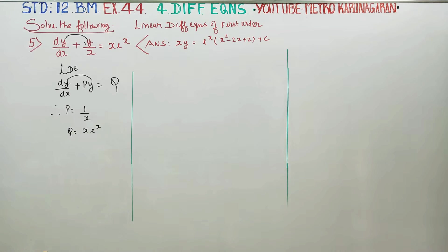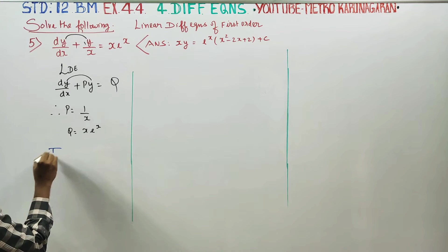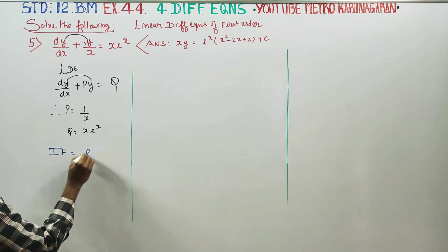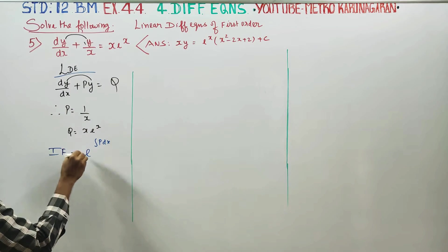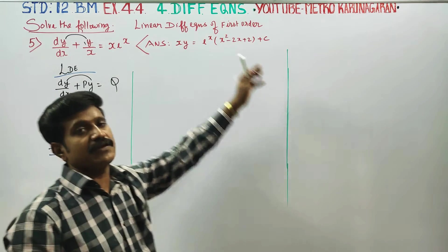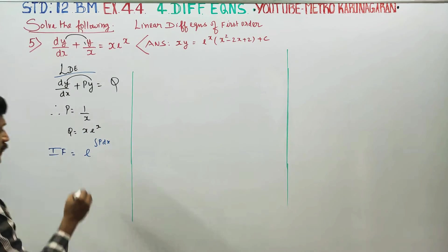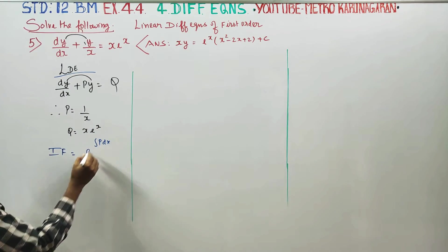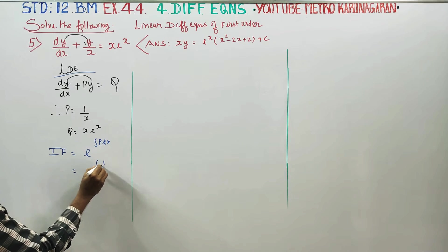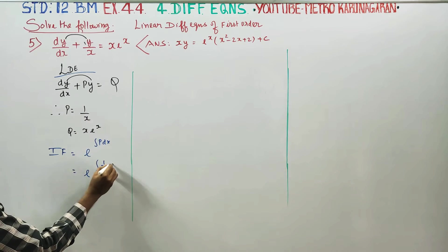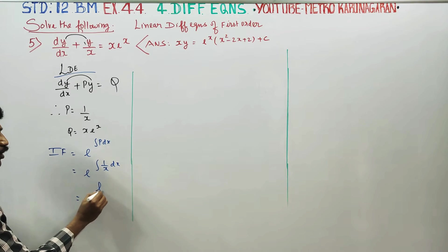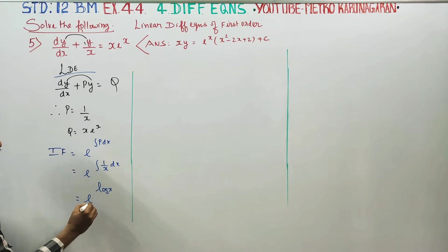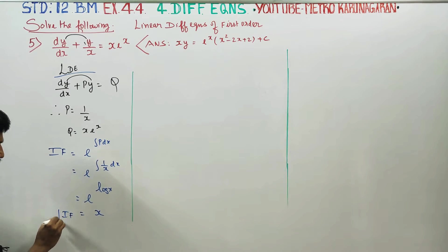After finding P and Q, we have to find the integrating factor. The integrating factor formula is e to the power of the integral of P dx. So integrating factor equals e power integral of 1/x dx, which gives e power log x. Since e and log cancel, the answer is x. So the integrating factor is x.